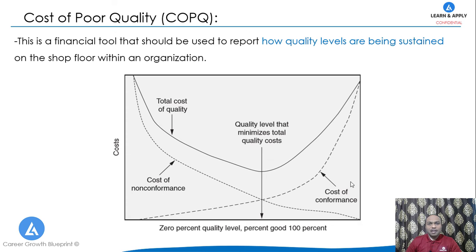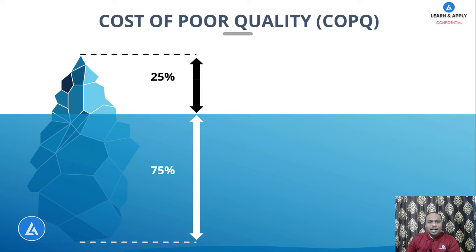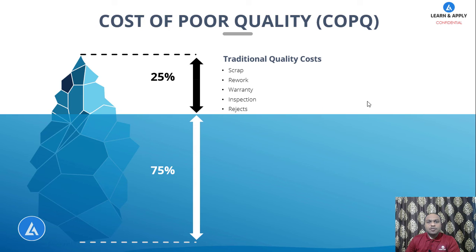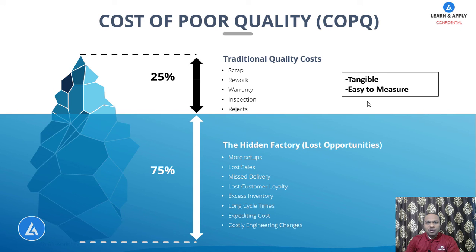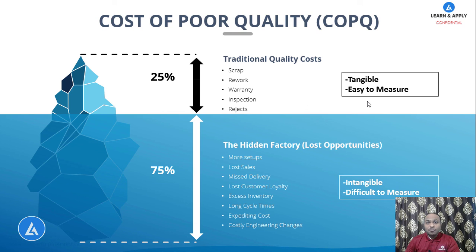Cost of poor quality has two main parts. The first part is 25% and consists of traditional quality costs such as scrap, rework, warranty, inspection, and rejects — these are called tangible costs and are easy to measure. The second part is 75% and is called the hidden factory and lost opportunities. It includes costs associated with more setups, lost sales, missed delivery, lost customer loyalty, excess inventory, long cycle times, expediting costs, and costly engineering changes. All costs in this second category are intangible and very difficult to measure, making calculation of total cost of poor quality very tedious.